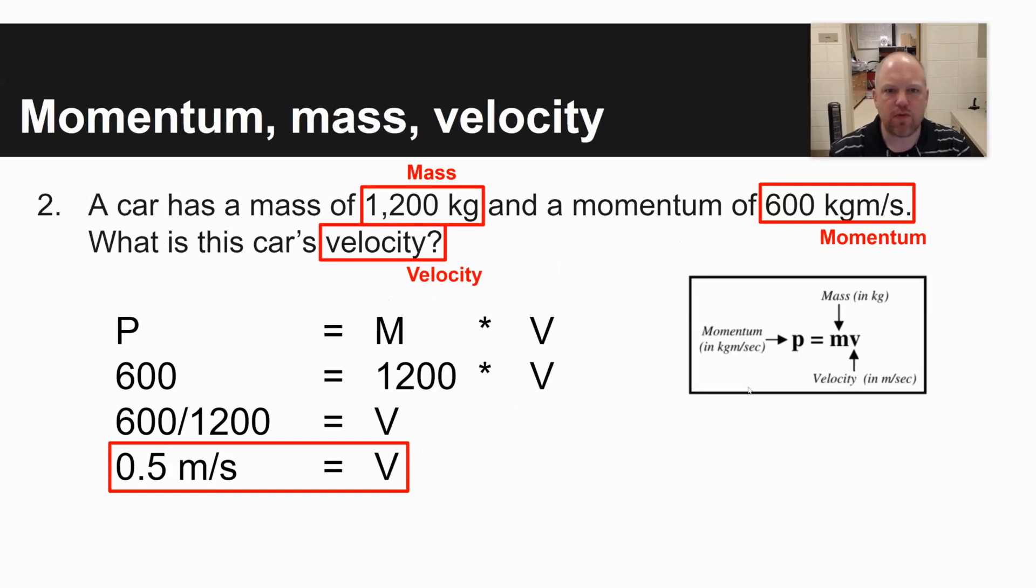The second question has to do with momentum, mass, and velocity. It says a car with a mass of 1,200 kilograms and a momentum of 600 kilogram meters per second, what is this car's velocity? So you're given mass, 1,200 kilograms, momentum, 600 kilogram meters per second, and you have to solve for velocity. So you want to use the equation P equals M times V. P is 600, M is 1,200, V is what you're solving for. And so your velocity would be 600 divided by 1,200, or 0.5 meters per second.